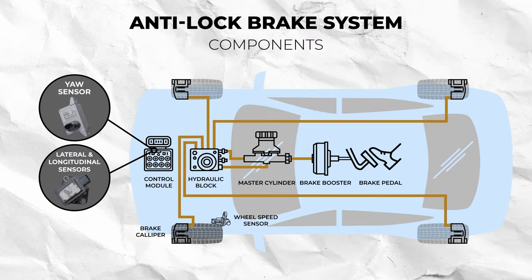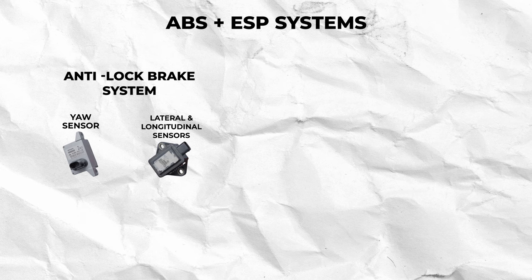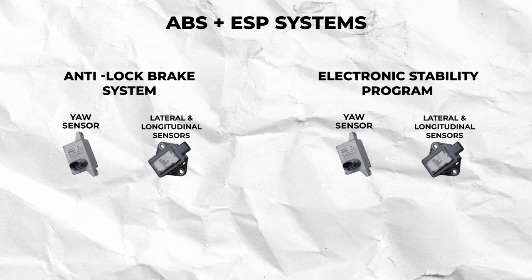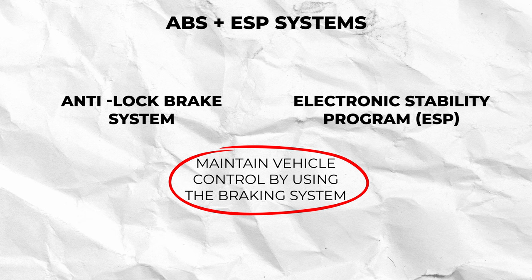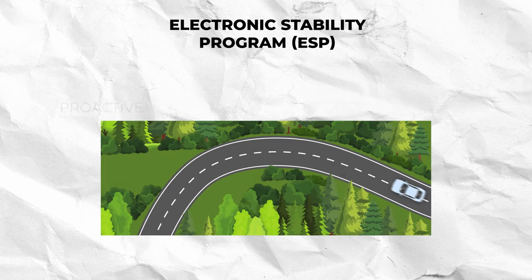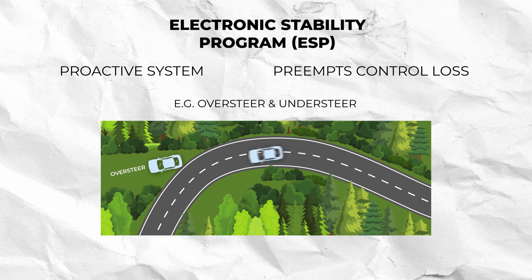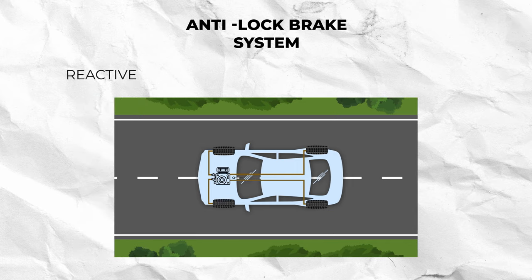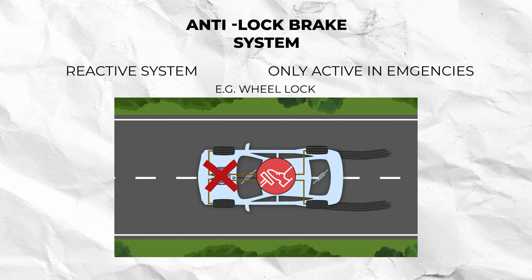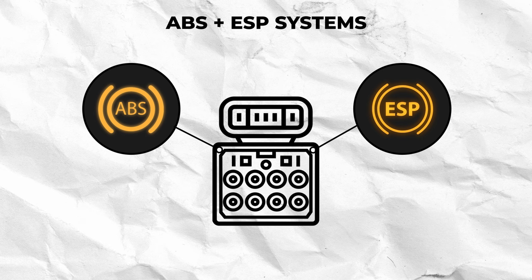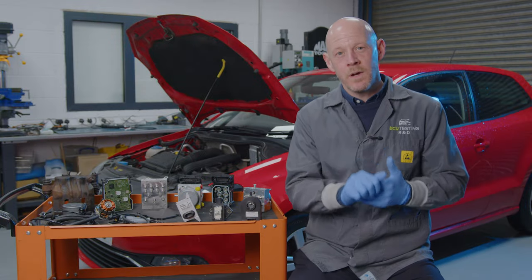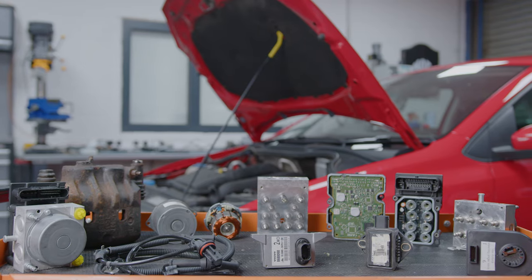Even though components such as the yaw, lateral, and longitudinal sensors can be integrated into the ABS unit, they share their function with both the anti-lock brake system and the electronic stability program, also known as the ESP, ESC, or VSC. The goal of both systems is to maintain vehicle control by utilising the braking system, but they do this in different ways. The ESP is a proactive system that tends to prevent loss of control before it occurs, whereas the ABS is more reactive, activating only when a potential wheel lock is detected during braking. Due to both affecting the braking system, the ESP control unit and its sensors can also be integrated into the ABS unit.